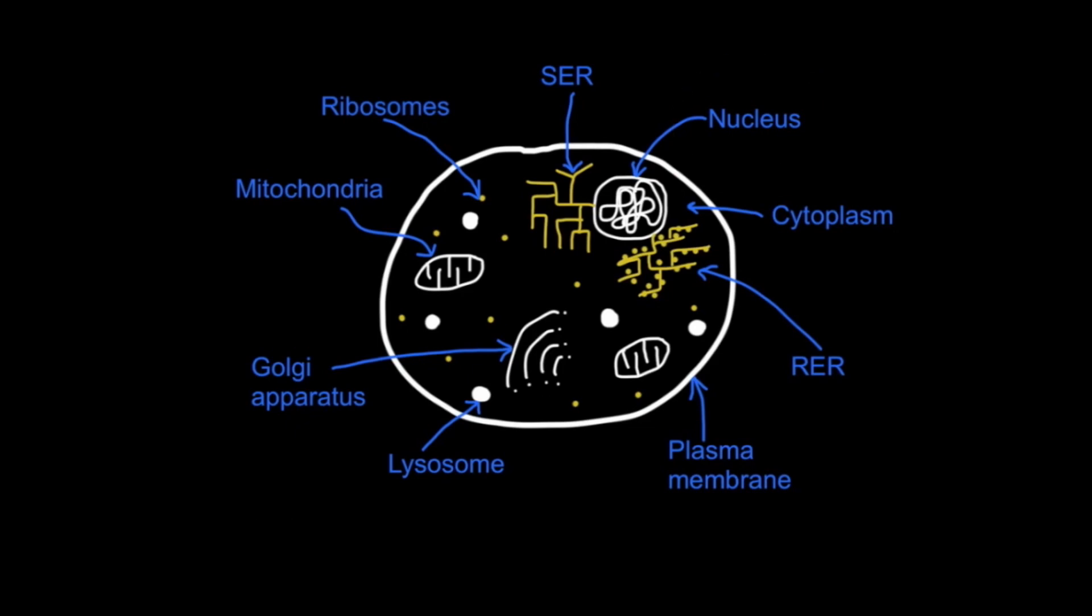A eukaryotic cell also has smooth endoplasmic reticulum (SER) and rough endoplasmic reticulum (RER), the difference being that the RER has ribosomes attached to it.